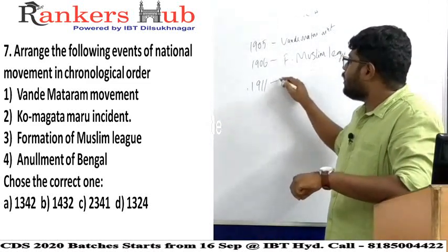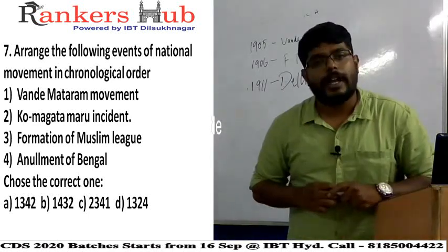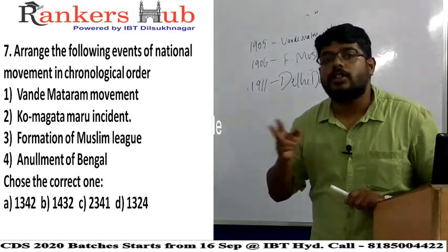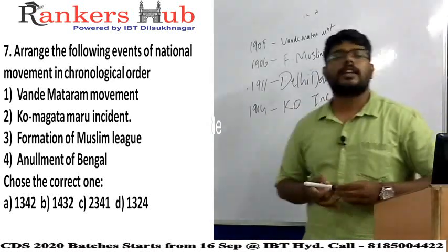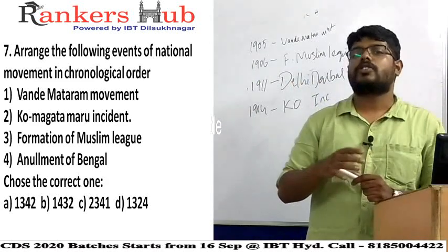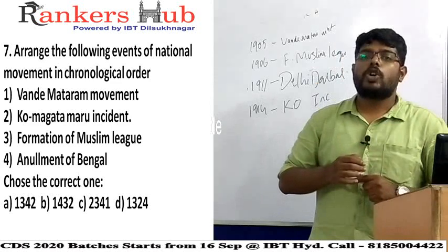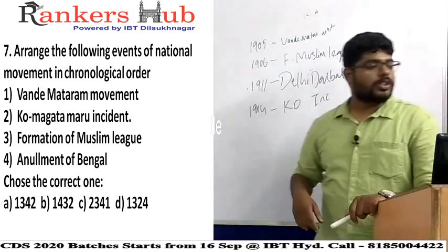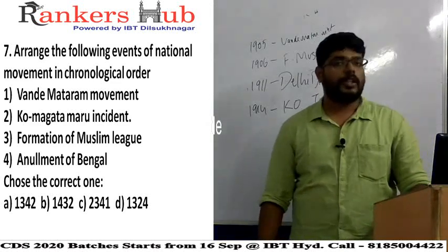Then the Annulment of Bengal — the cancellation of the Bengal partition — happened in 1911 during the Delhi Durbar, when the Prince announced Bengal partition would be cancelled and the capital was shifted from Calcutta to Delhi. Last is the 1914 Komagata Maru Incident: a Japanese ship carrying immigrants from Calcutta to Vancouver, Canada was turned back and British opened fire on the immigrants. So the correct sequence is Vande Mataram, Muslim League, Delhi Durbar, Komagata Maru — answer is option D, 1, 3, 2, 4.